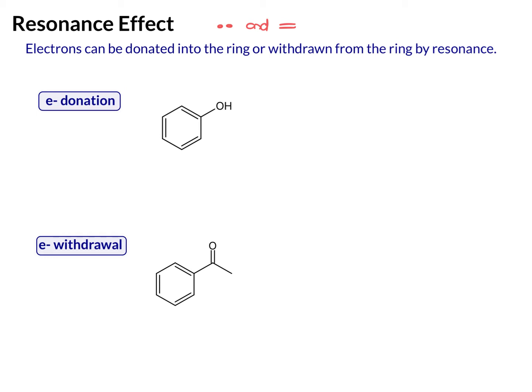So in the first case, we can think about electron donation. Here is an OH, and we know that that is a strong donating group. The reason for that is because of the lone pairs on that oxygen. With those being next to the ring, through resonance, those can donate their electrons into the ring.